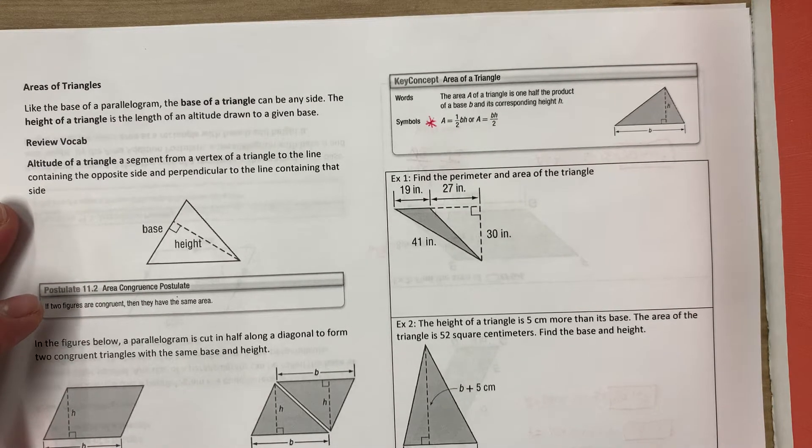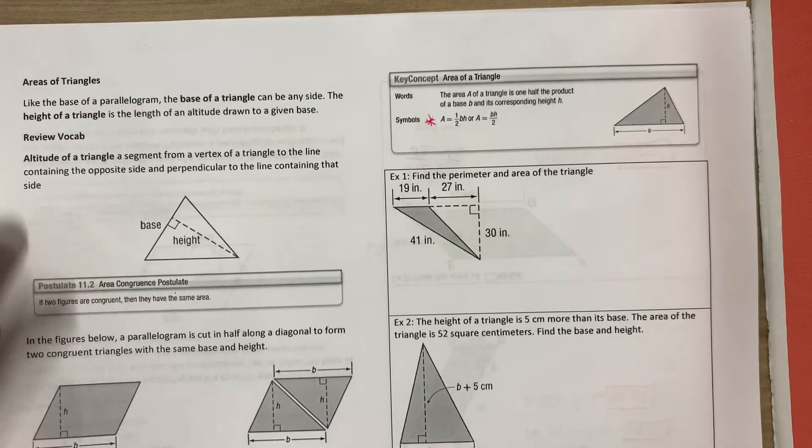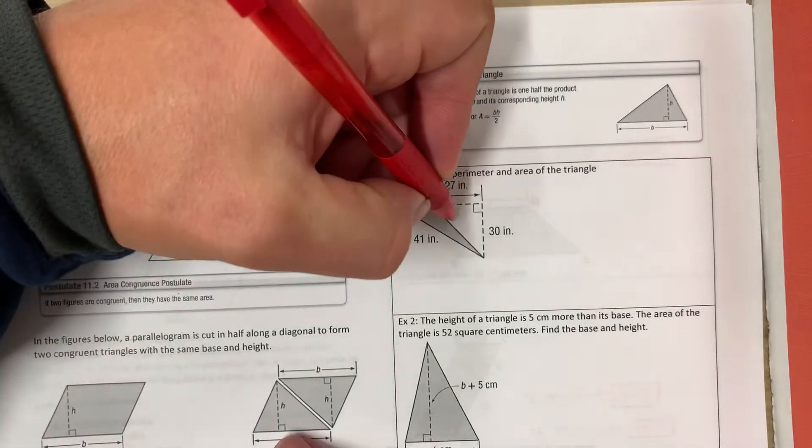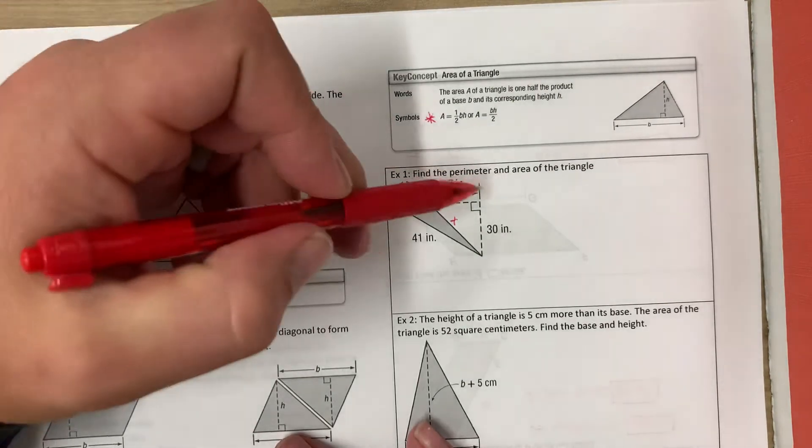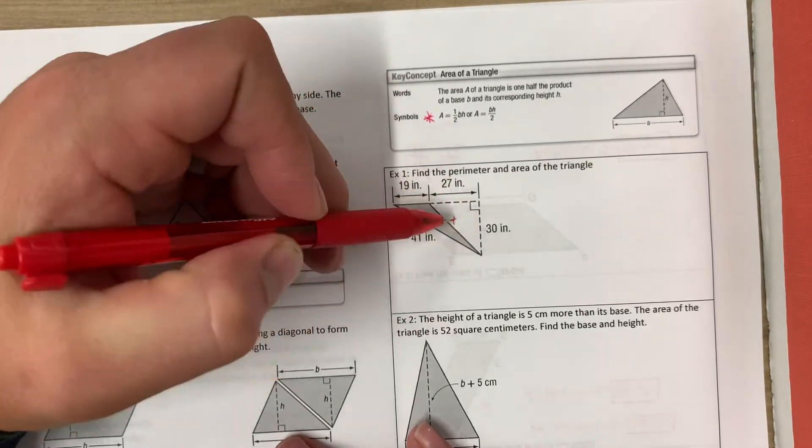So for number one, find the perimeter and area of the triangle. To find the perimeter, we need to figure out what this side is, X, for the shaded region. To do that, we can use the Pythagorean theorem to find X.